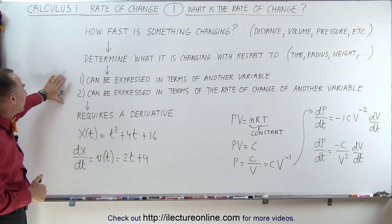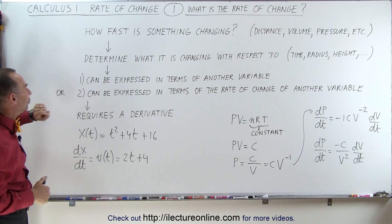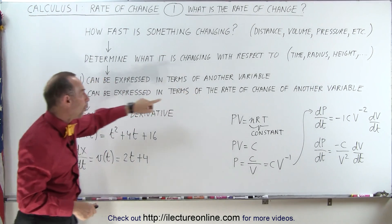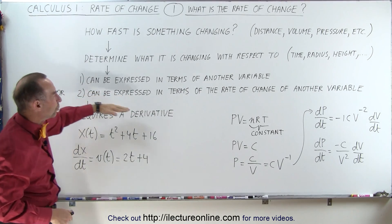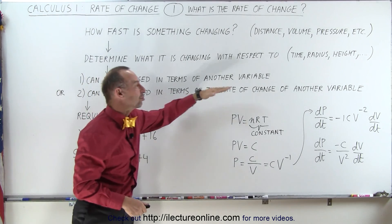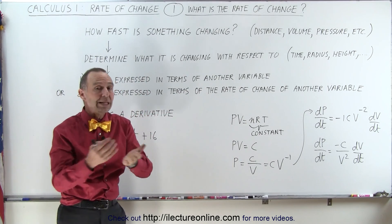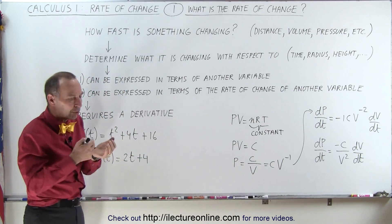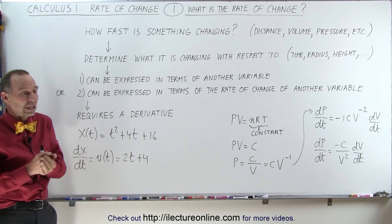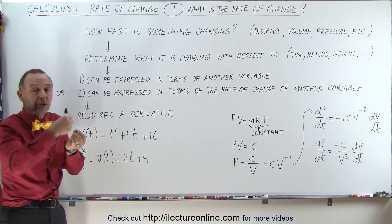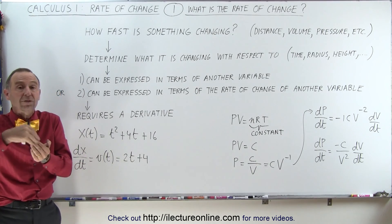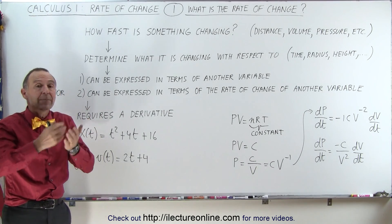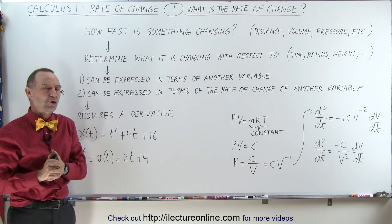And it can be expressed in two ways. We can express it in terms of another variable, or it can be expressed in terms of the rate of change of another variable, or a combination thereof. So when we're looking at how fast something is changing, it could depend on another variable, the rate of change of the other variable, or a combination of the two.